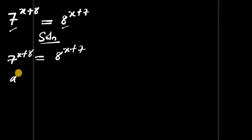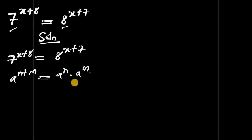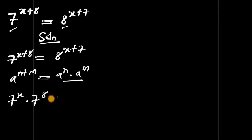If you have a power n plus m, it equals a power n times a power m. Applying this identity here, we're going to have 7 power x times 7 power 8 equals to 8 power x times 8 power 7.